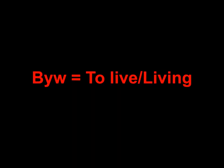Ble dach chi'n byw? — Where do you live? We start the answer with 'Dwi'n byw yn' — 'I live in'. 'Dwi' or 'I am', 'byw' means 'live' or 'living', 'yn' means 'in', followed by the place name. For example: Dwi'n byw yn Aberystwyth — I live in Aberystwyth.